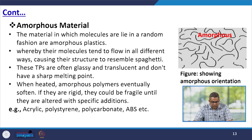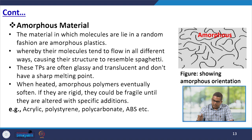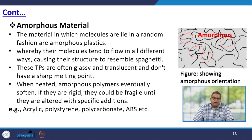In amorphous materials, the molecules lie in a random fashion — these are amorphous polymers where molecules tend to flow in all different ways. This may cause their structure to resemble spaghetti. They are often glassy and translucent, and do not have a sharp melting point because of the variety of chain lengths. When heated, amorphous polymers eventually soften, and if rigid, they could be fragile until altered with specific additions. Examples include acrylic, polystyrene, polycarbonate, and ABS.